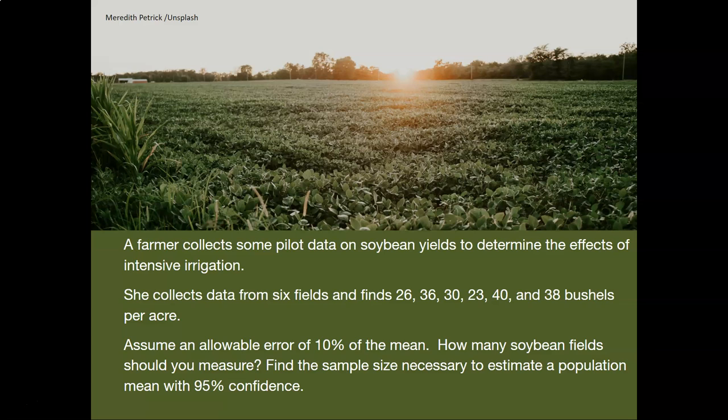26, 36, 30, 23, 40, and 38 bushels per acre. So let's assume an allowable error of 10% of the mean. So we can allow our estimate to be off by 10% around the mean. How many soybean fields should you measure? Find the sample size necessary to estimate a population mean with 95% confidence.